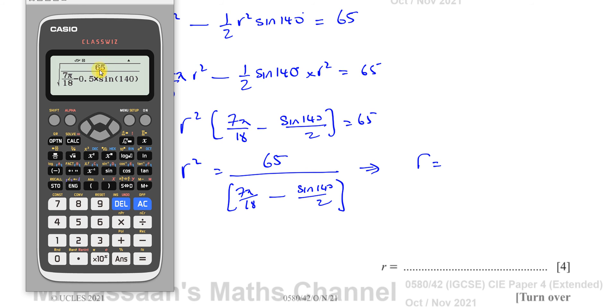So I got 65 over 7 pi over 18 minus half times sine 140, and the square root of all of that, because I want to find what r is, not r squared. And that will give me my answer, which is 8.4967 continuing on.